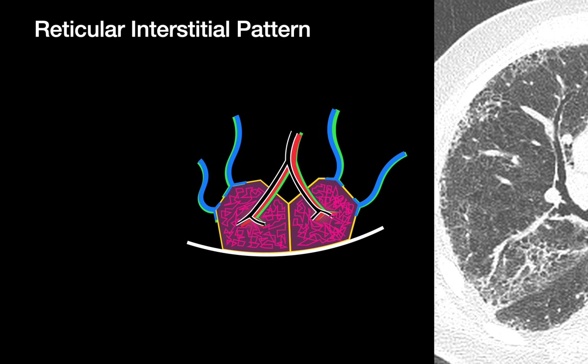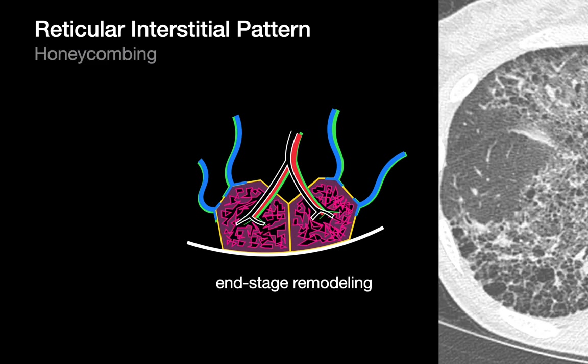In cases where this progresses to end stage, some of the lung parenchyma within these spaces may go away entirely, and you go from seeing dark gray to just pitch black — a phenomenon we refer to as honeycombing. Honeycombing represents end-stage reticular interstitial fibrosis or reticular interstitial opacity pattern.